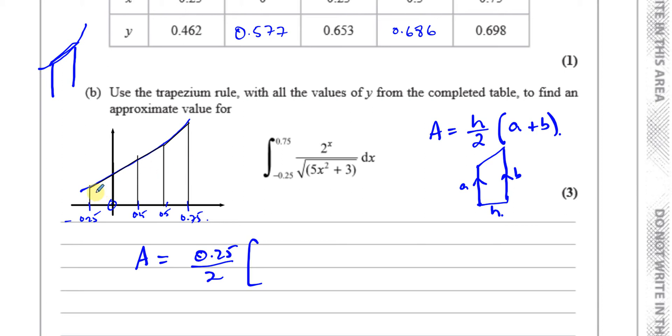So the first and the last will only be used once, because the area of this trapezium will be the distance between the parallel sides divided by 2 times the first plus the second length. And then for the next trapezium it's going to be 0.25 divided by 2 times this height plus that height. You can see that this is used in both trapeziums and this is used in both these two trapeziums, but the first and the last y values are only used in the first and the last trapezium.